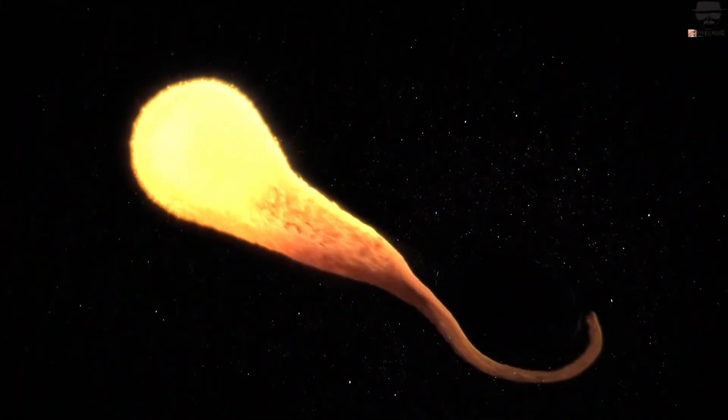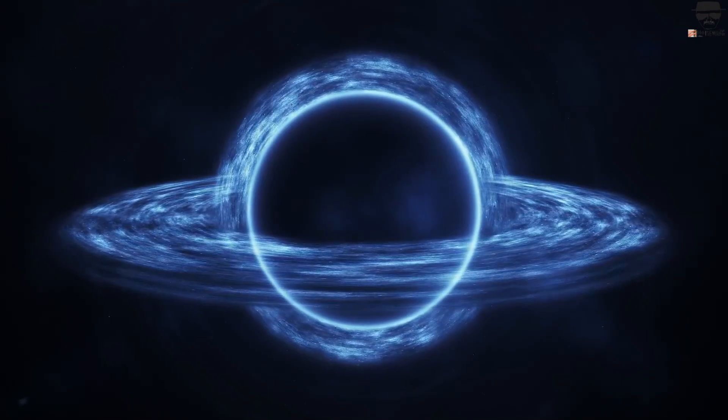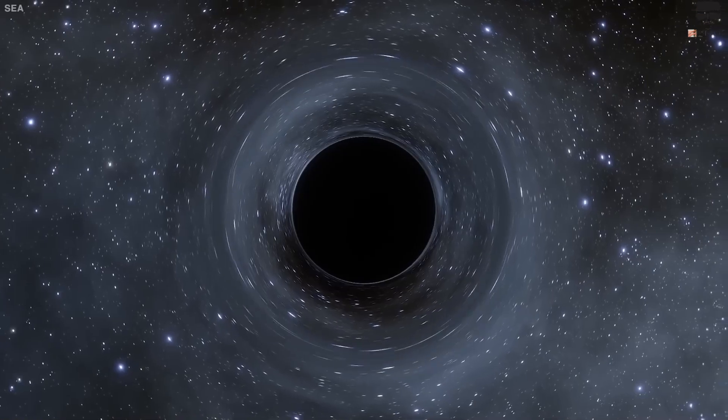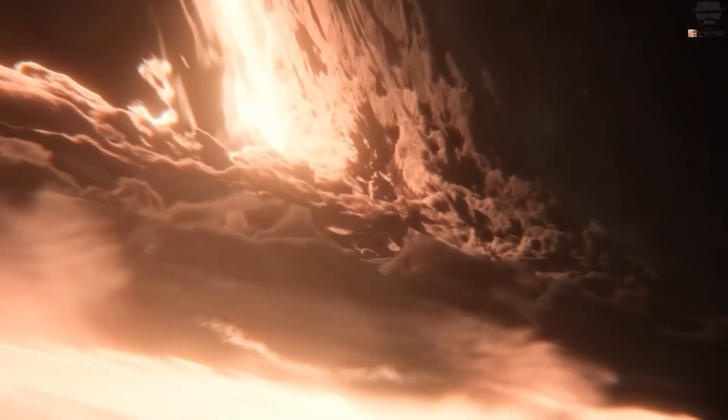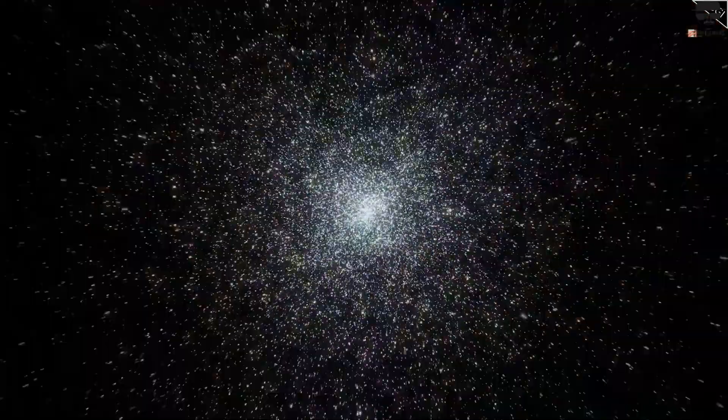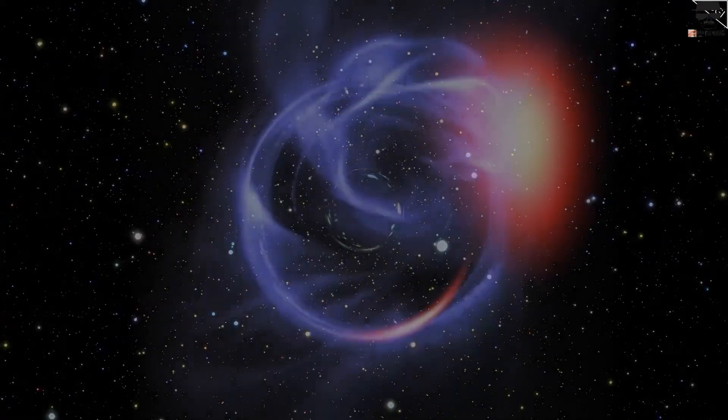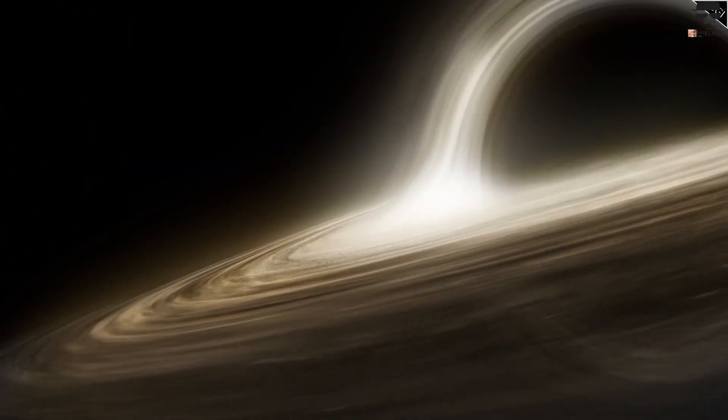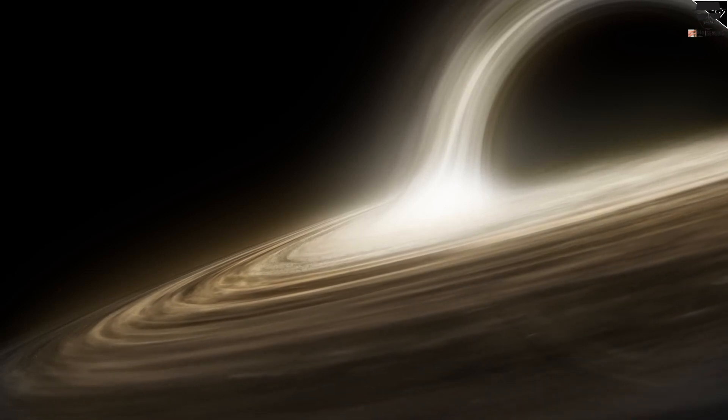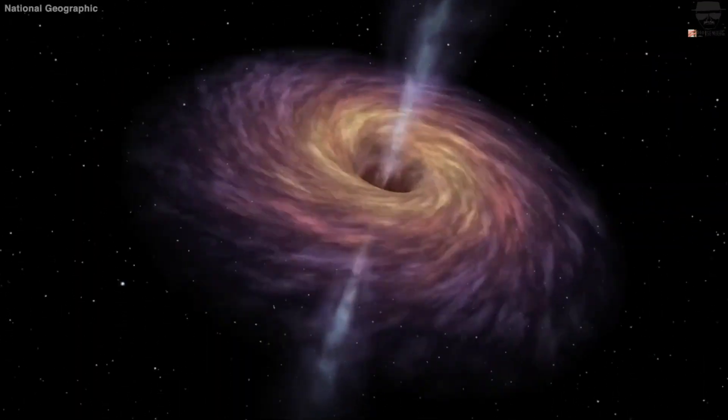Typically, black holes are considered colossal entities that pull everything toward them, including light. But the newly observed black hole seems to be having the opposite effect. This supermassive black hole is breaking all the rules. Rather than sucking in light like we've always thought black holes do, it's actually creating new baby stars. A long trail of these newborn stars has been observed in the wake of the black hole, stretching out an incredible distance of 200,000 light years. Scientists are still puzzled about why this black hole is behaving so differently from others. But a team led by Yale astronomy professor Peter van Dockum recently reported their findings in the astrophysical journal Letters.